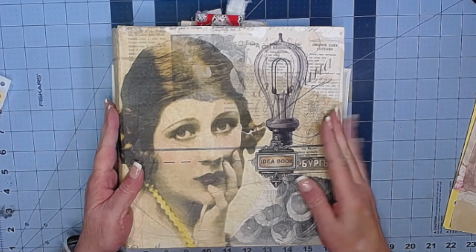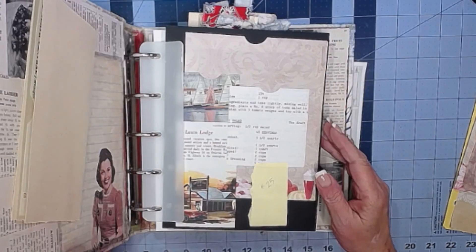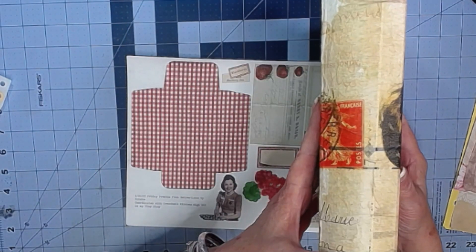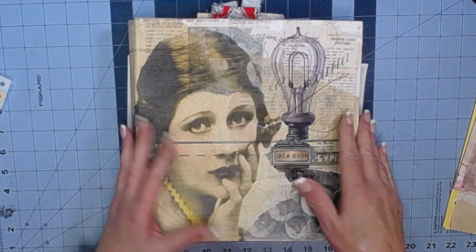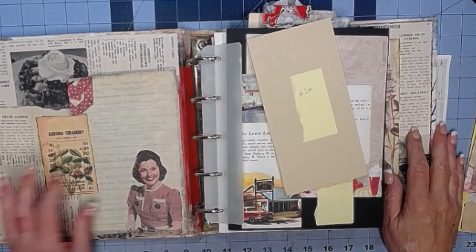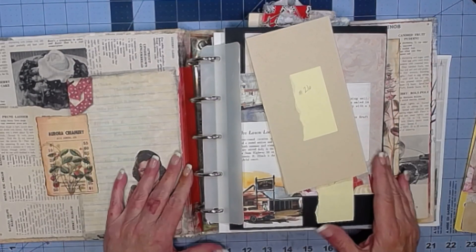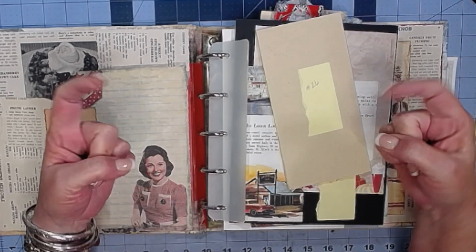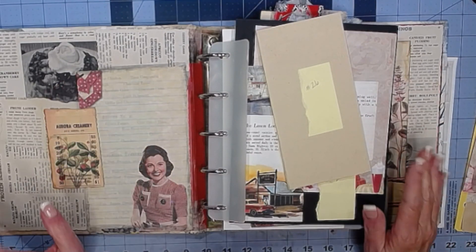It's been a while since we worked in here. Just to give you a recall, we made this book out of a Weight Watchers recipe book, decoupaged the outside, and I've been following along with Corrie Dahman's Flips, Flaps, and Folds, putting things in here. I will certainly link Corrie down below. She's awesome.